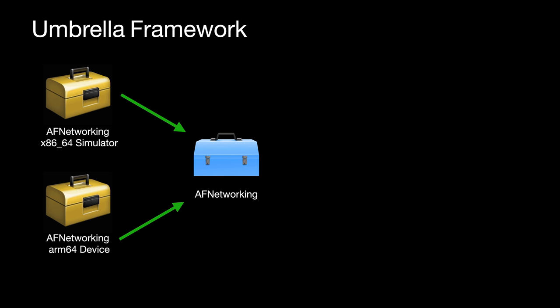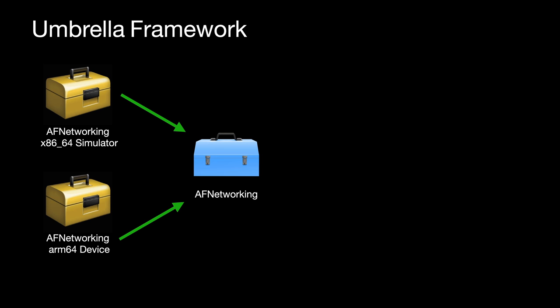When designing your Umbrella Framework, you would create or prepare your dependencies such as AF Networking. If you need to make it available for other architectures, you would bundle it in an XCFramework. This XCFramework — such as the one shown here for AF Networking — you will embed into your Umbrella Framework, such as the XYZ Framework, and eventually use it in your application.